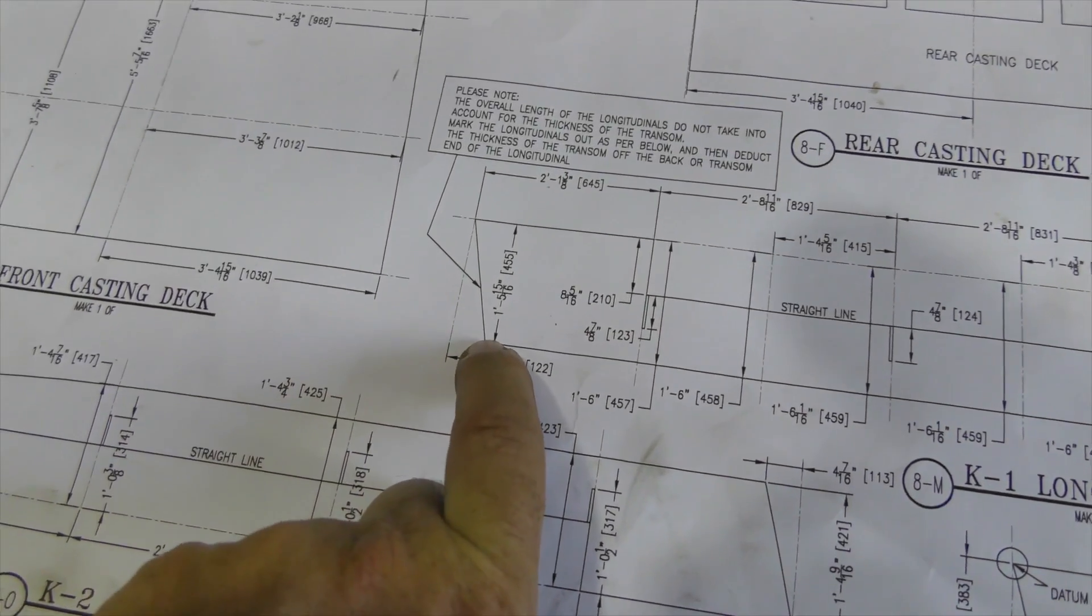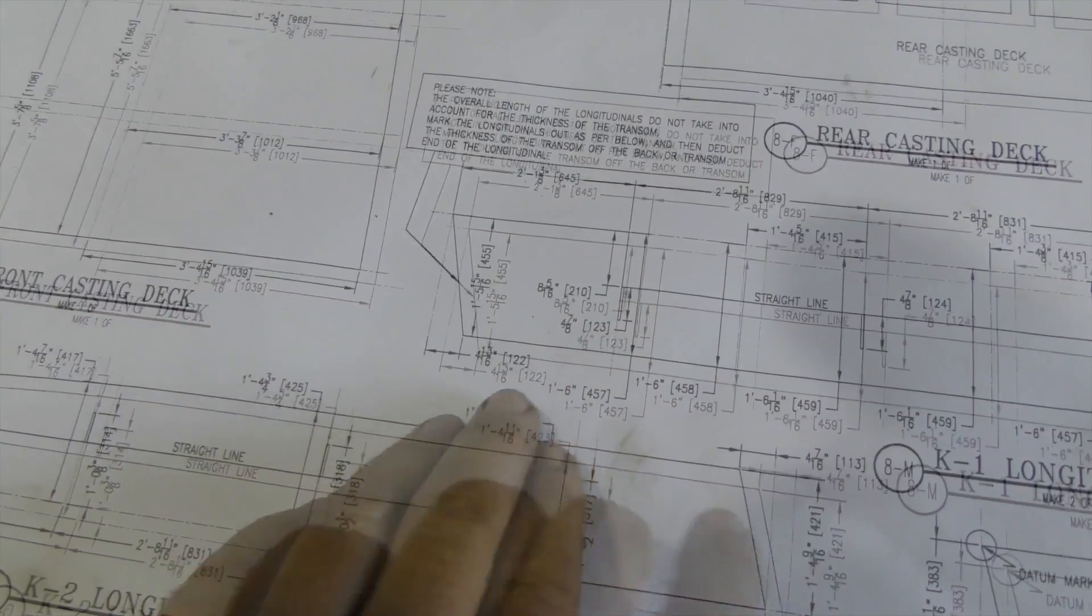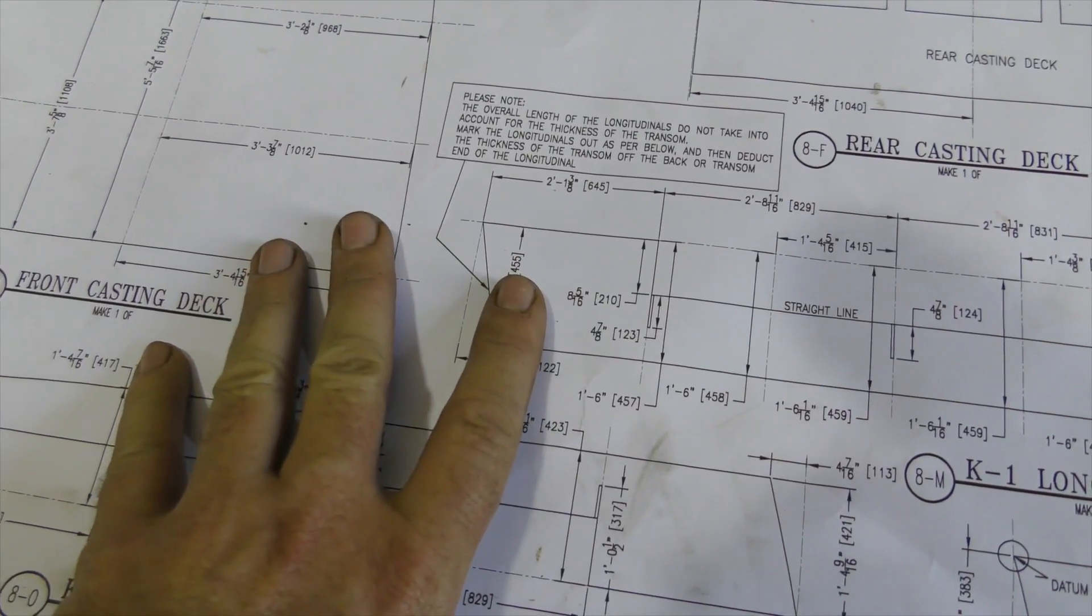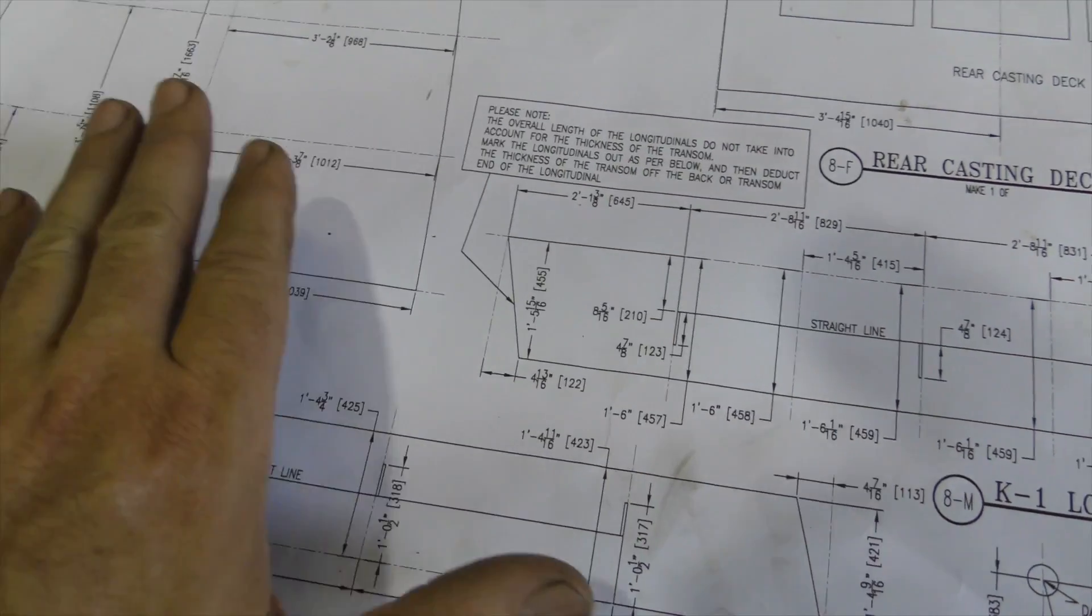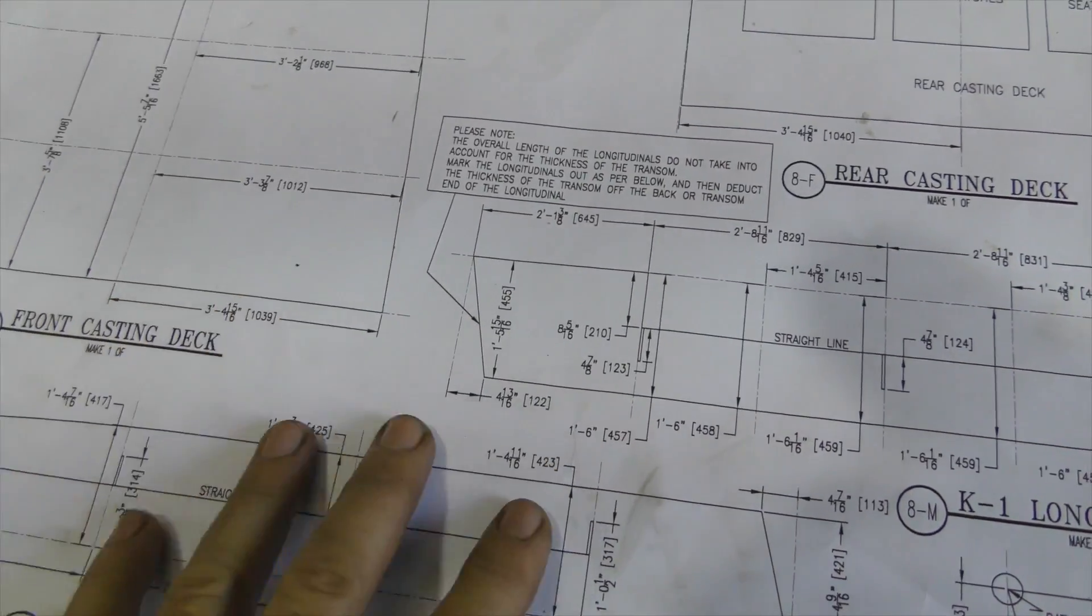So theoretically, we're going to need to cut 18mm off the end here. I'm going to leave this full length for now, because I can always trim it off later, but for now I'm going to be a little bit paranoid and just leave it at its full length, so that I can confirm this actually is what I need to do for this boat.